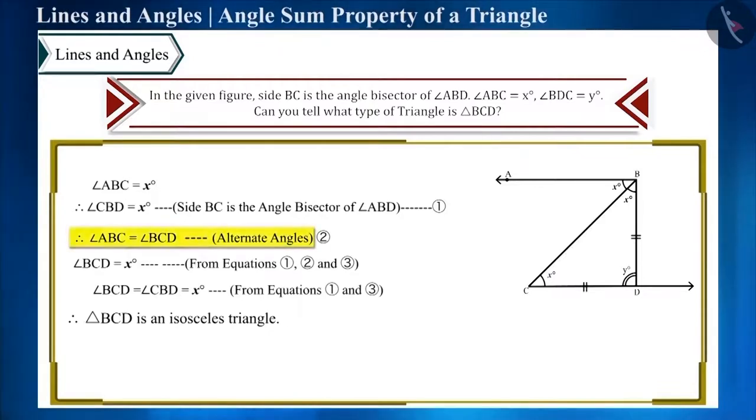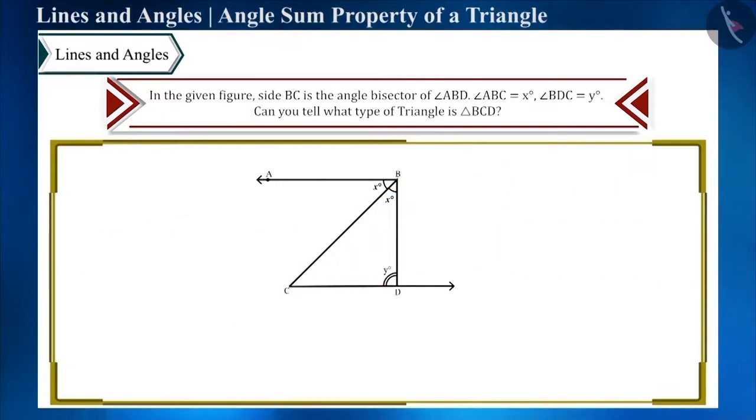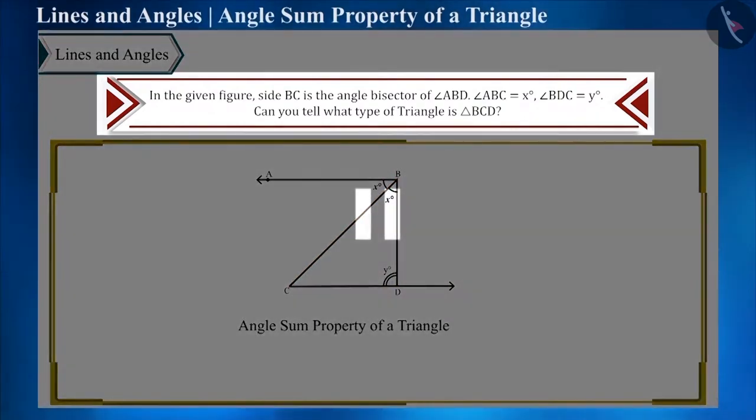We can find the value of angle BCD by using the angle sum property of a triangle. Pause the video and try to solve it yourself, and see if the given triangle is a scalene triangle or not.